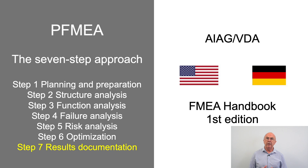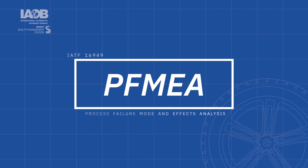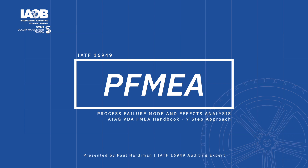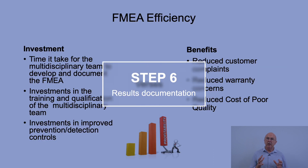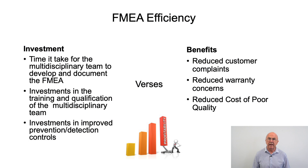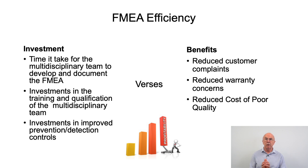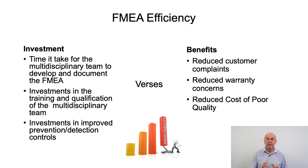This video looks at developing a process FMEA using the seven-step approach of the AIAG VDA FMEA handbook first edition. Today we're looking at step 7: results documentation. By the time we get to step 7, we have already invested significant time in developing the FMEA and maybe we've already started to spend money on putting better prevention or detection controls in place. Hopefully when we go into product launch we're going to see reduced or hopefully zero customer complaints, no warranty concerns, and a reduction in the cost of poor quality compared with previous similar products.